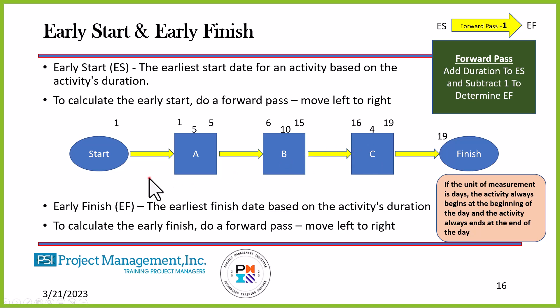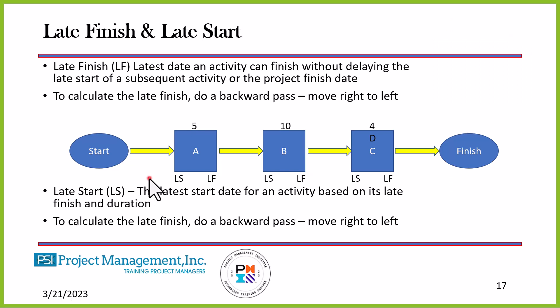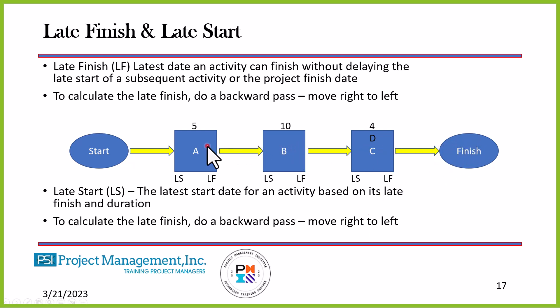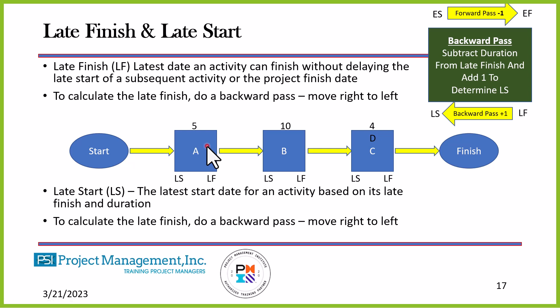Now let's look at Late Finish (LF) and Late Start (LS). Late Finish is the latest date an activity can finish without delaying the subsequent activity or the project finish date; to calculate it we do a backward pass, moving right to left. Late Start is the latest start date for an activity based on its Late Finish and duration — again, a backward pass. In the backward pass, we subtract the duration and add one, the opposite of the forward pass.